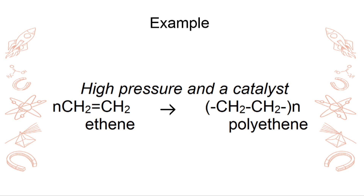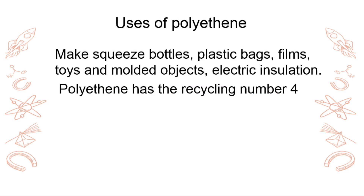What is the difference? This one has got a double bond while it is still a monomer, but when it is now a polymer, it does not have that double bond anymore. The most important thing for the exam is the uses of polyethene: it makes squeeze bottles, plastic bags, films, toys, and molded objects. Electric insulation — that plastic we have — is also made of polyethene. Polyethene also has a recycling number.